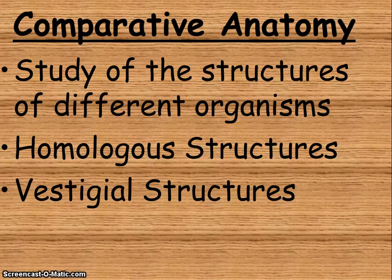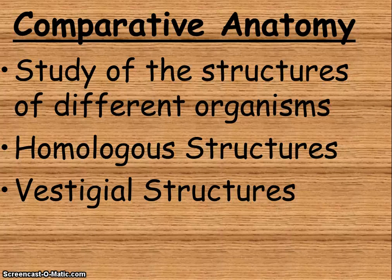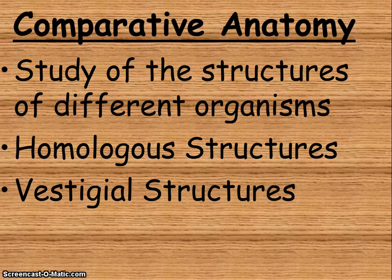The next thing we're going to talk about is comparative anatomy — pretty much studying the structures of different organisms. This is further evidence of evolution. We have two different terms: homologous structures and vestigial structures. Homologous structures are common parts with the same basic structure.